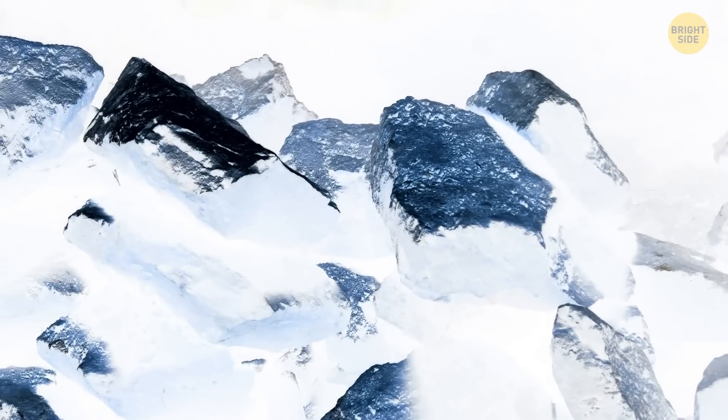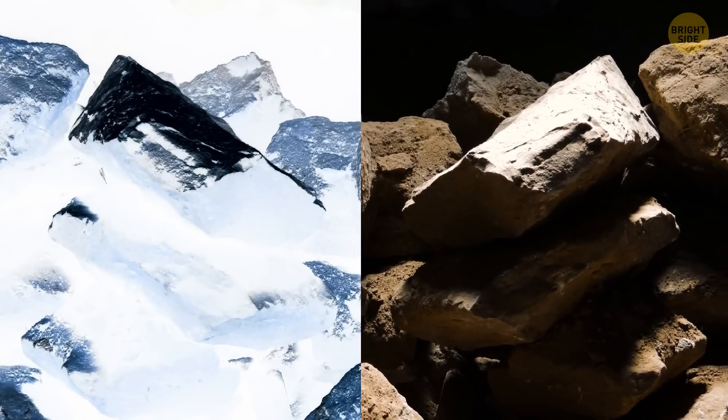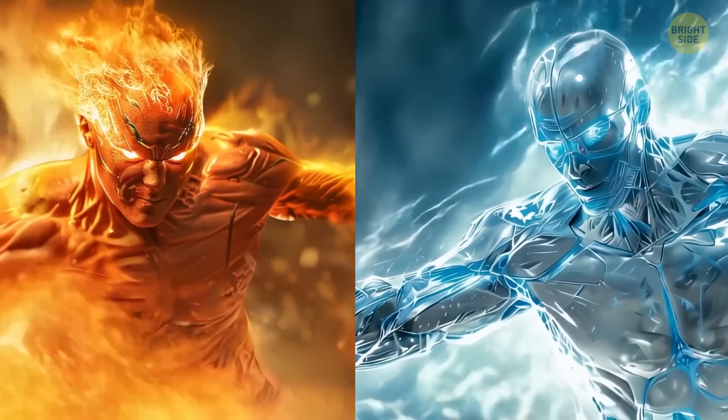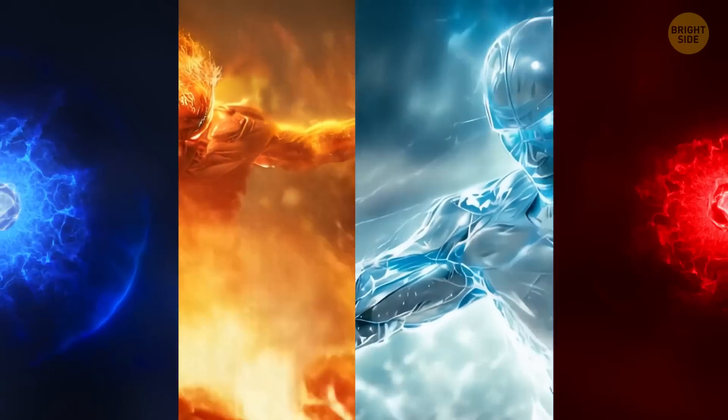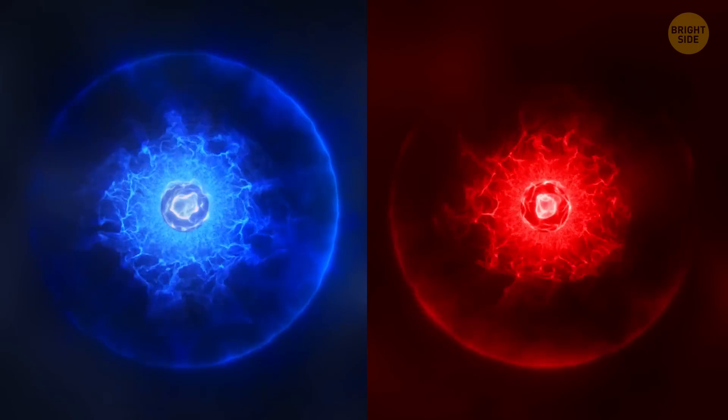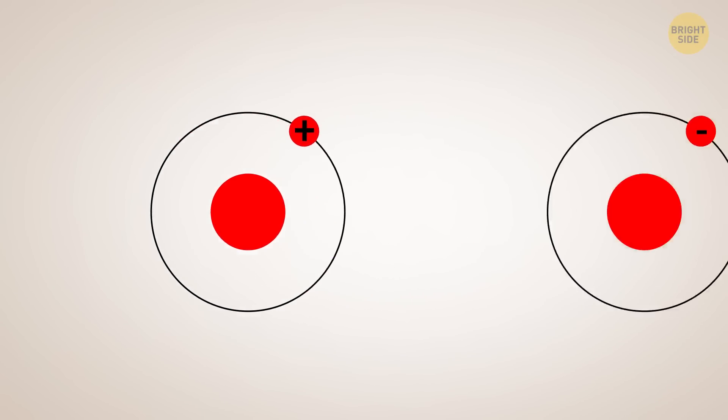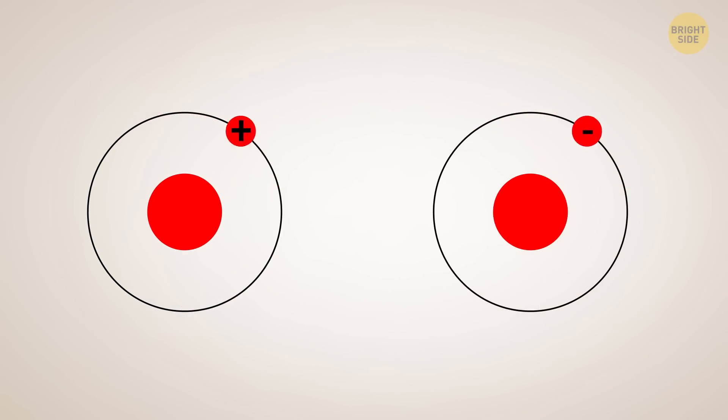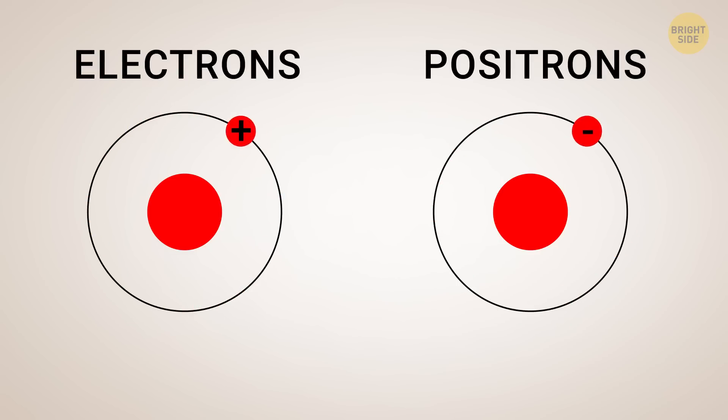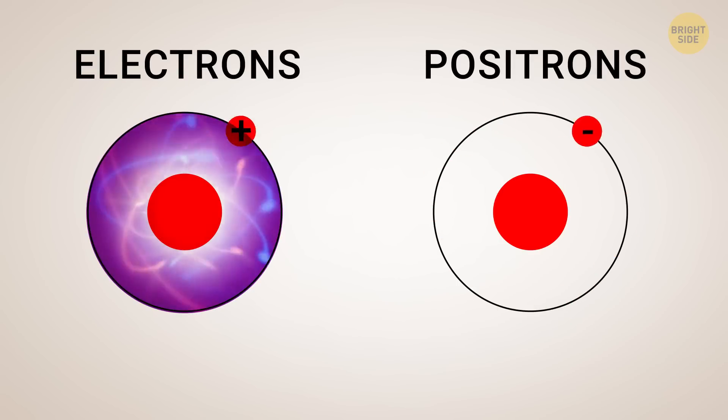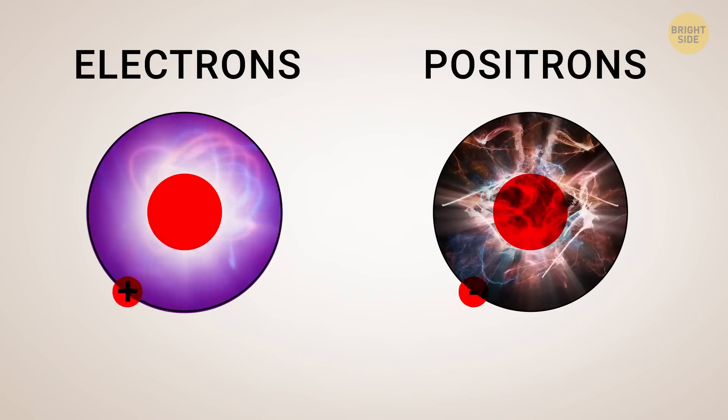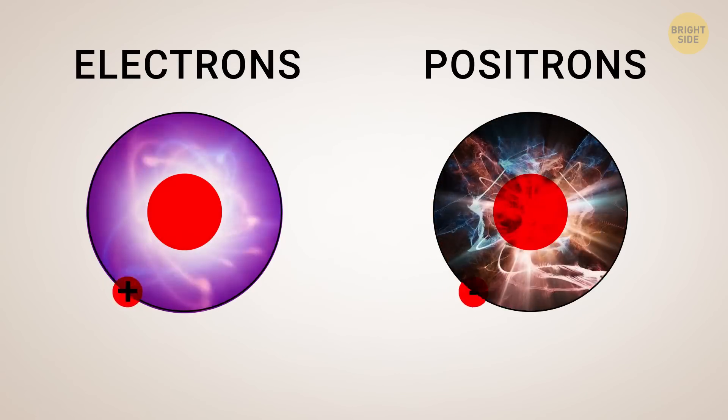Antimatter, on the other hand, is just like regular matter but the opposite. Just like how superheroes have opposite powers from their villains, antimatter has opposite properties from regular matter. So, while regular matter has protons with positive charges, antimatter has antiprotons with negative charges. Instead of electrons, we have positrons, and instead of neutrinos, we have antineutrinos. It's like the mirror image of everything we're familiar with.